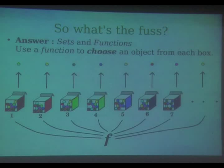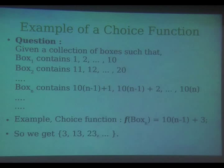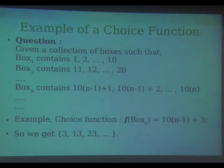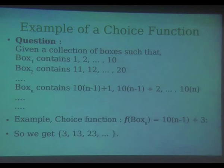Suppose I have boxes like these: the first box contains numbers 1 to 10, the second box contains numbers 11 to 20, and so on. There are infinite number of boxes. A sample choice function is, say, 10n minus n plus 3. What I get out of each box is 3, 13, 23, and so on. I have constructed a choice function for this particular example. Axiom of choice is general — it says that given any collection of boxes, be it finite, countable, uncountable, or even larger, given any collection of non-empty boxes, you can choose an element from each box.